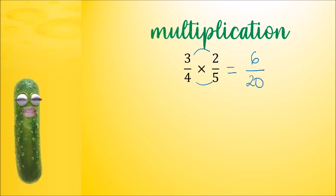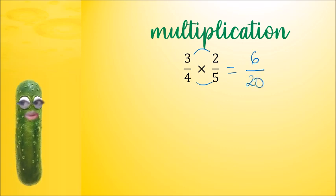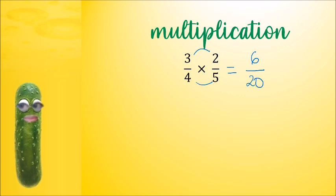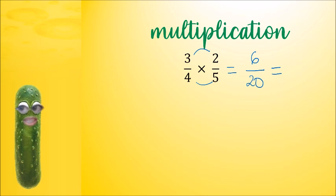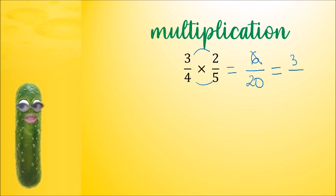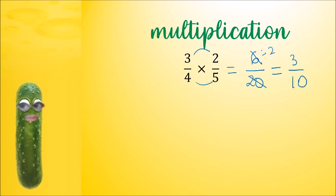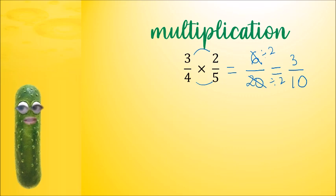But we noticed something from previous lessons — they're both even numbers. So we can cancel them and come up with a simpler equivalent fraction. 2 into 6 goes 3 times, and 2 into 20 goes 10 times. So we divide both numbers by 2 to get a simpler fraction.